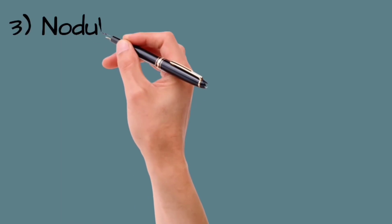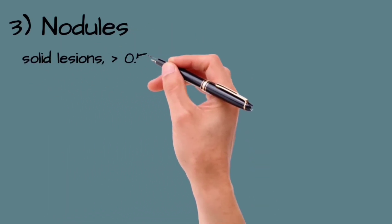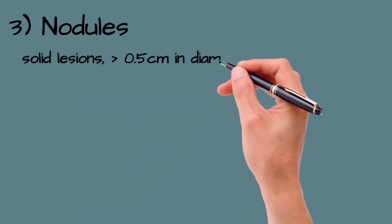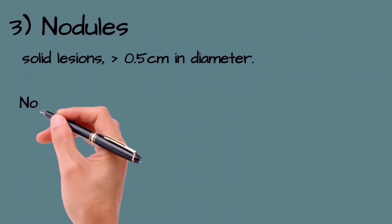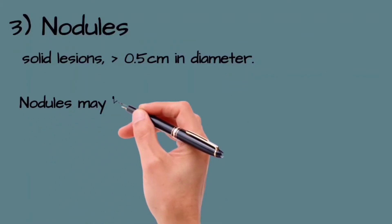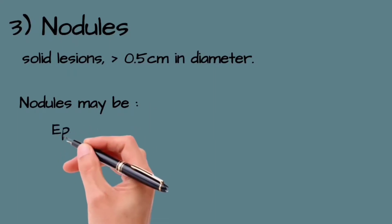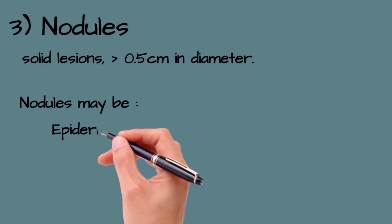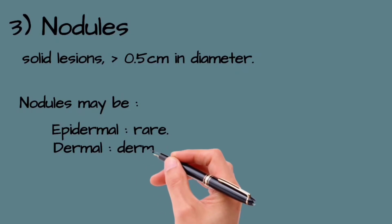Nodules are solid lesions more than 0.5 cm in diameter, have a deeper component, and some nodules are better felt than seen. Nodules may be epidermal, dermal as in dermatofibroma, or subcutaneous — for example, lipoma.